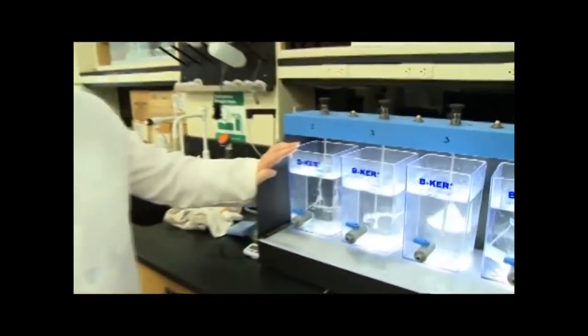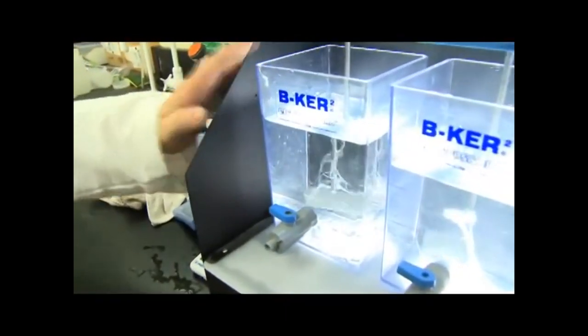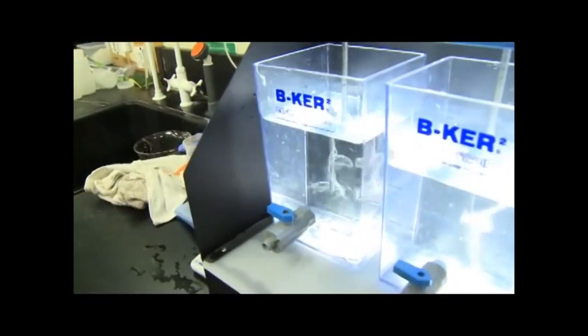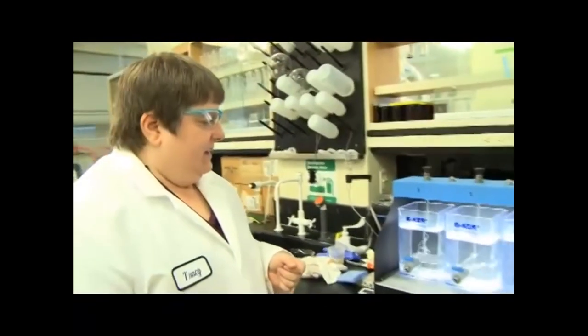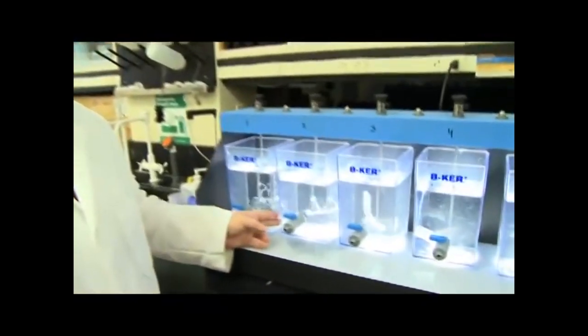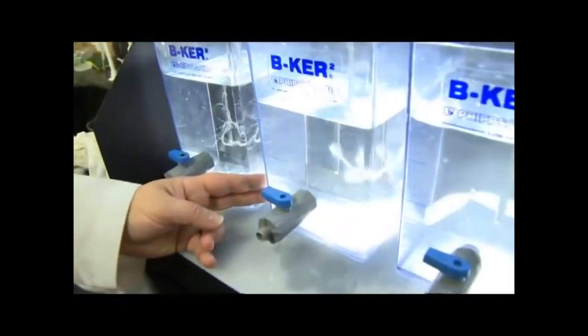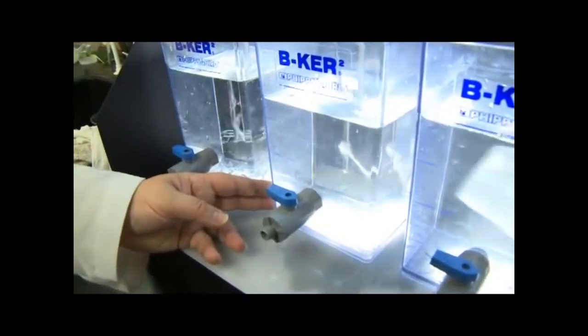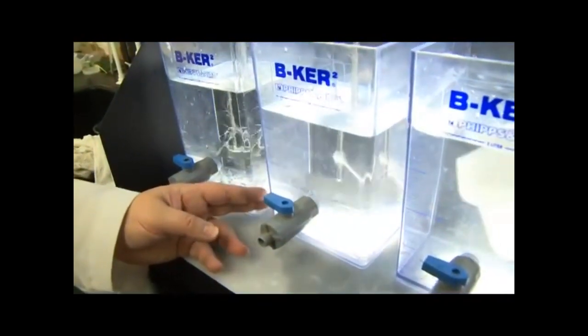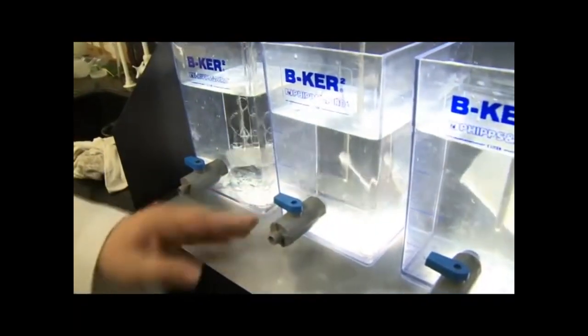In this first jar, we have dental floss, and no surprise, it's not dissolving, but it is wrapping itself around the propeller shaft, which it will do in any kind of pump. In the next one, we have Q-tips, and they do look like they might be falling apart a little bit, but they've already jammed it and made it stop running several times.